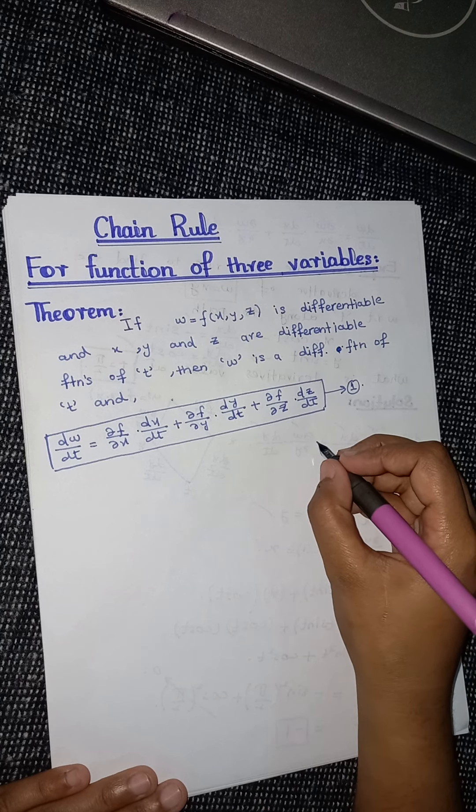Looking at equation number one, we have the formula: dw/dt = (∂w/∂x)(dx/dt) + (∂w/∂y)(dy/dt) + (∂w/∂z)(dz/dt). Let's solve it. First, finding the partial derivative of w with respect to x — here y and z are treated as constants.